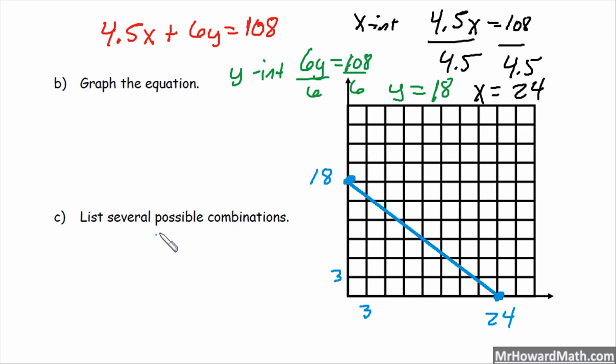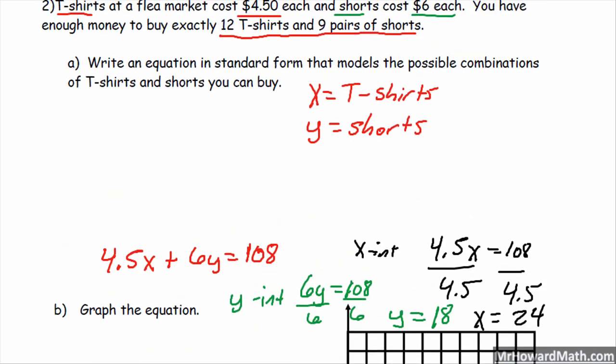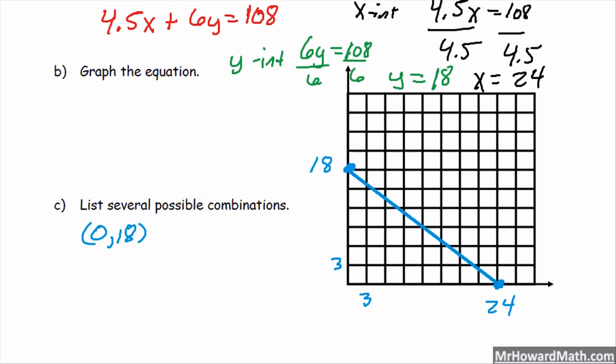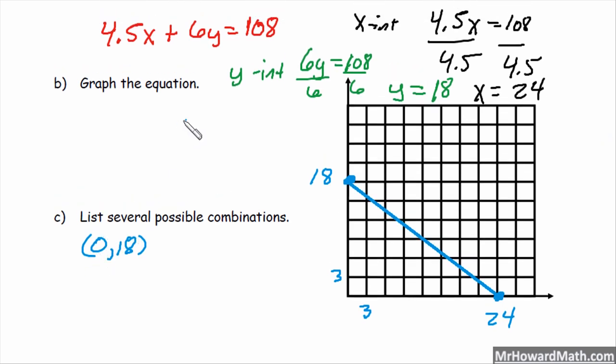Several combinations. So the same way we did it last time, we can start with the y-intercept: 0, 18. So that would be, based on what we set up, x is t-shirts, so 0 t-shirts, 18 pairs of shorts. Let's go ahead and list our x-intercept, so that would be 24 t-shirts, 0 pairs of shorts. But we want some more, so we can find the slope.